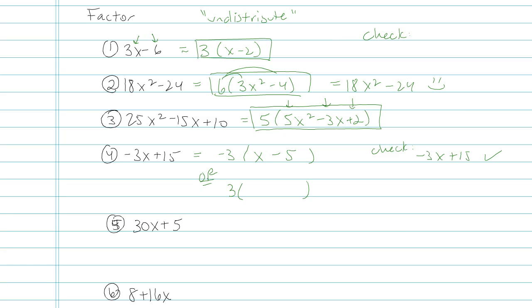If I factor out a positive 3, then my first term would have to be negative x. Another common student mistake there is with that negative. So either one of these is fine. Technically 3 is the greatest common factor, but it's a good idea sometimes to practice factoring out the negative 3 as well.